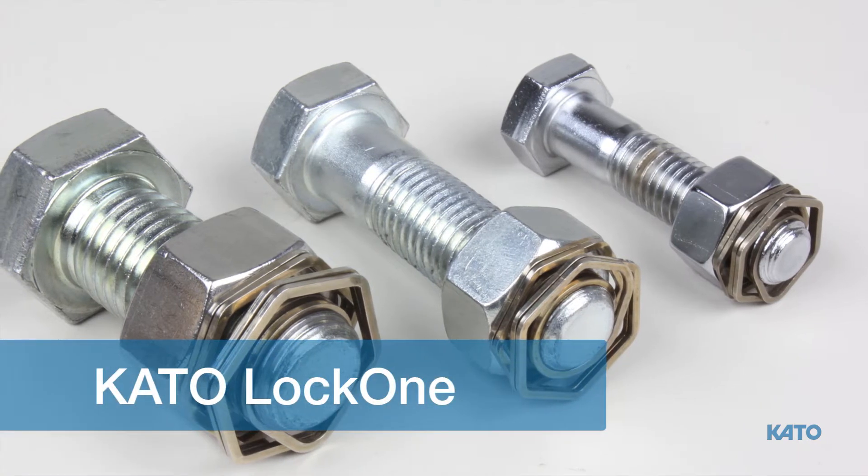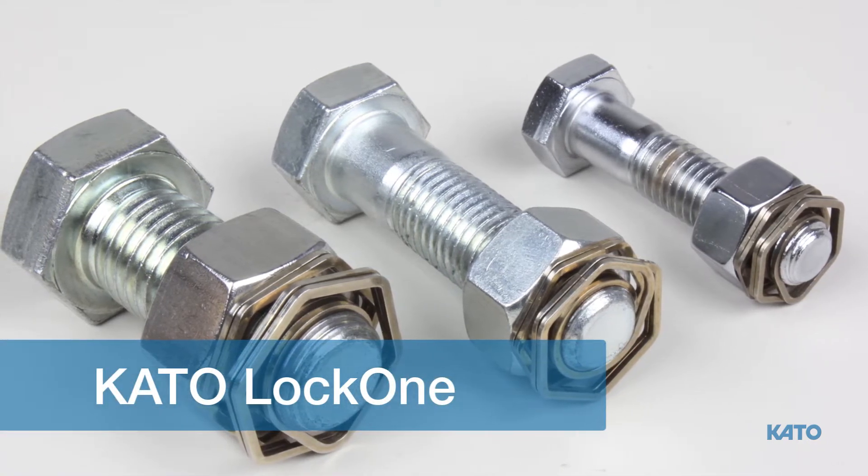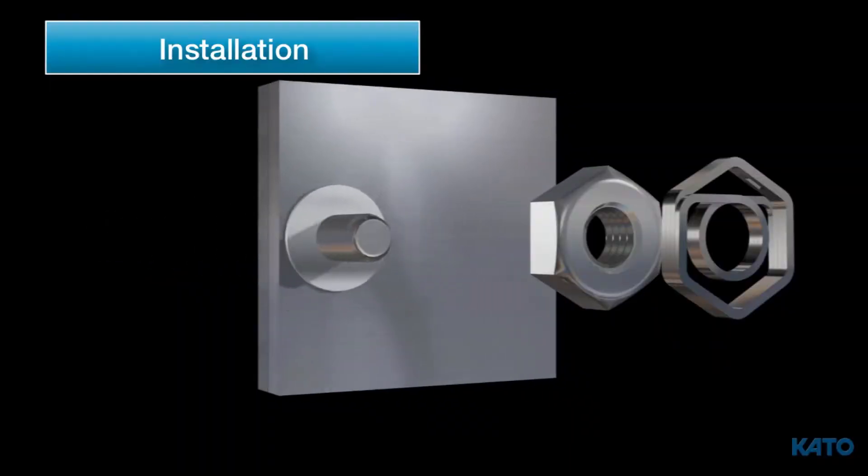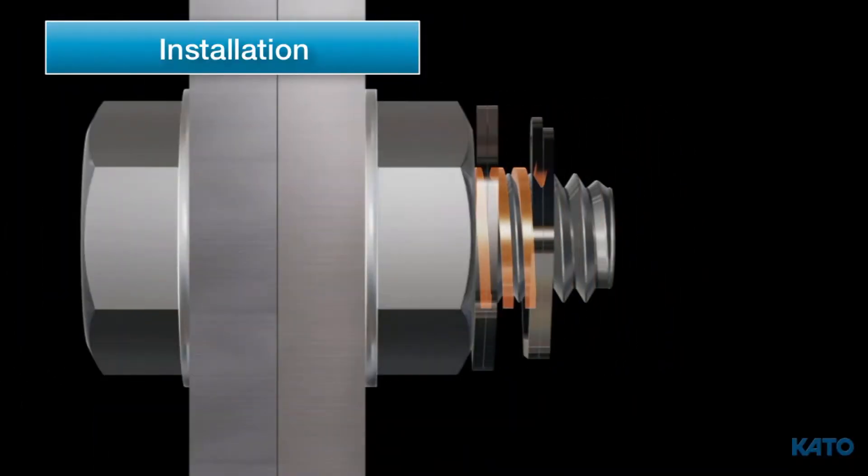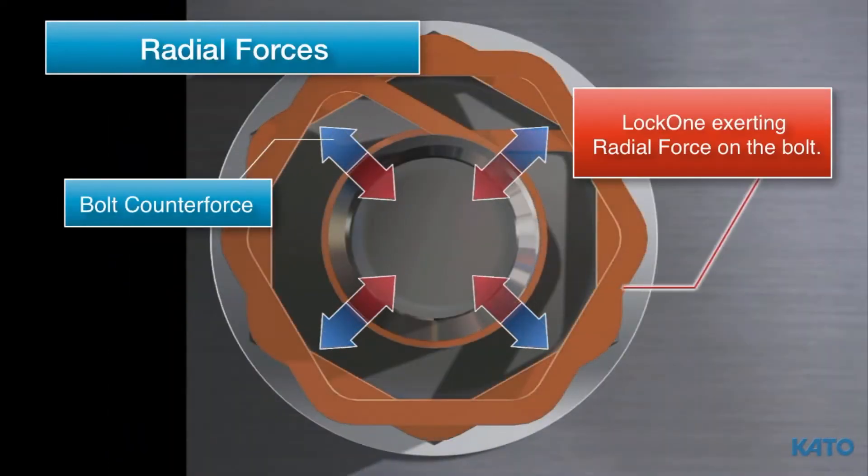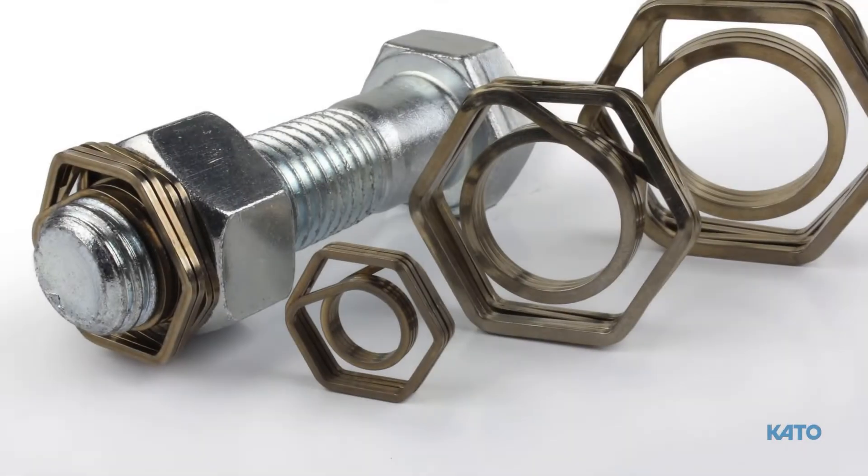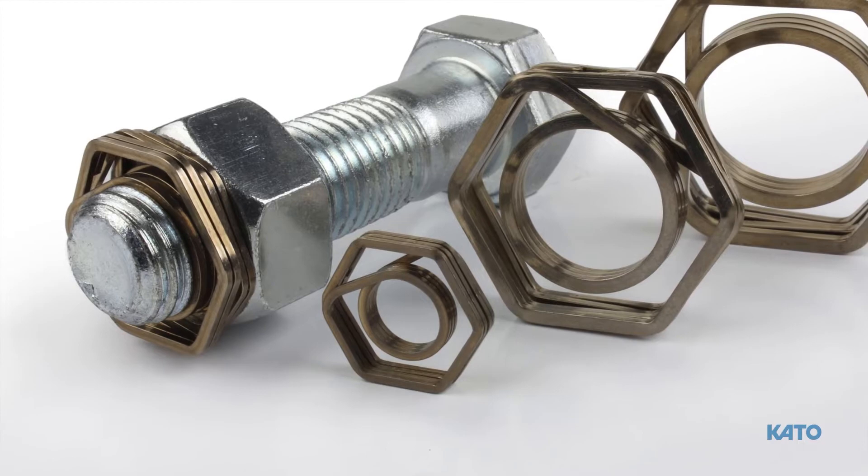Kato Fastening Systems is proud to present Lock One, a superior locking force. Lock One is a revolutionary lightweight fastener designed to prevent any standard nut from loosening free under vibration. This video will demonstrate just how easy it is to use Lock One.